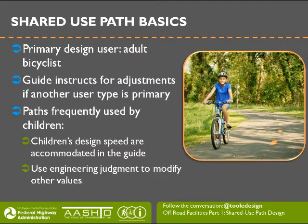The new guide recognizes the adult cyclist as the primary design cyclist, with guidance for adjustments when another user type is primary. Keep in mind that paths are frequently used by children, so there is a range of users and engineering judgment is needed when modifying values. Design speed is a good example—the guide provides a greater range of values and more discussion on design speed, requiring engineering judgment if you stray from the recommended value.